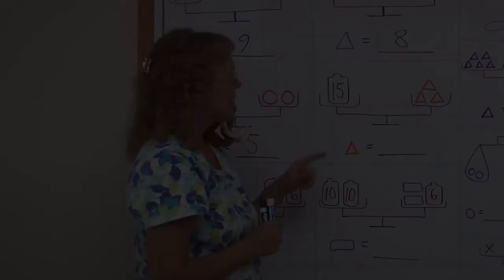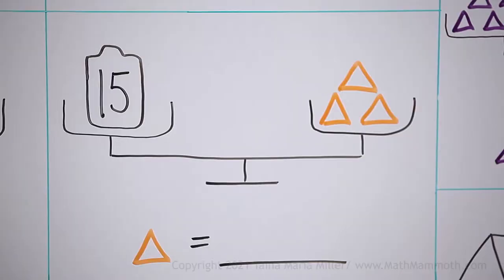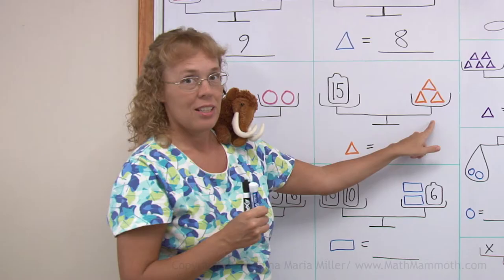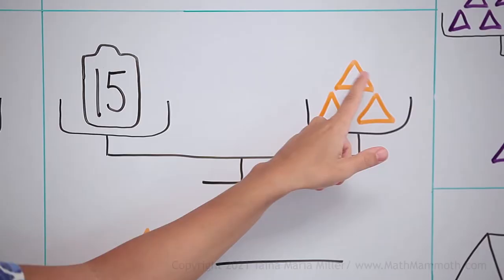Then this one, it's an easy one too. 15 on this side, so this side must also be 15. Three of these is 15, so one triangle must be 5.